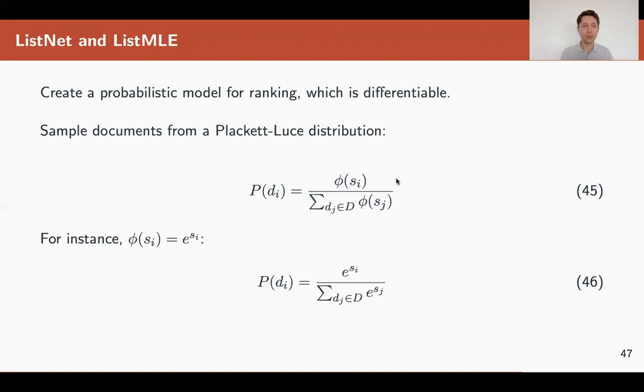So, for example, we can use the Placket-Luce distribution where the probability of the document is this function here. Again, kind of softmax. Where SI is a score, SIJ is a score produced by our ranking function.